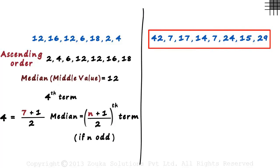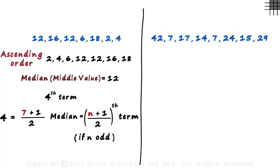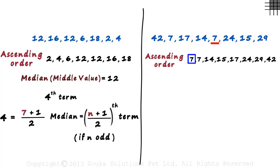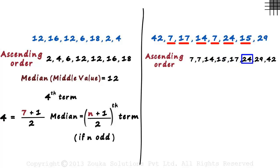To find the median, we first arrange the numbers in ascending order: 7, 7, 14, 15, 17, 24, 29, and 42.